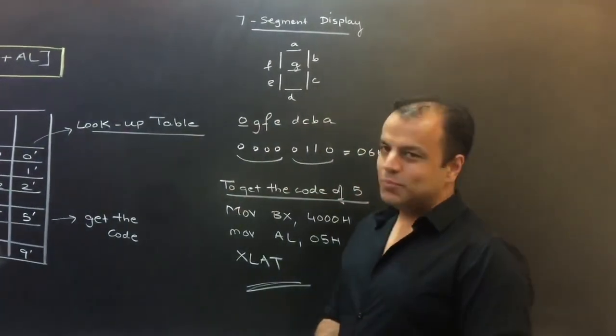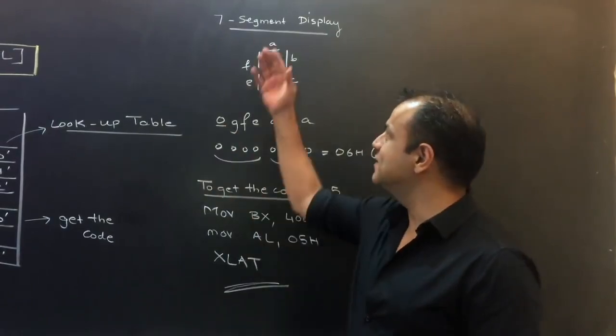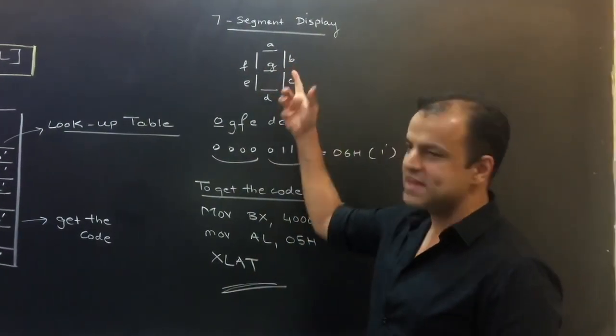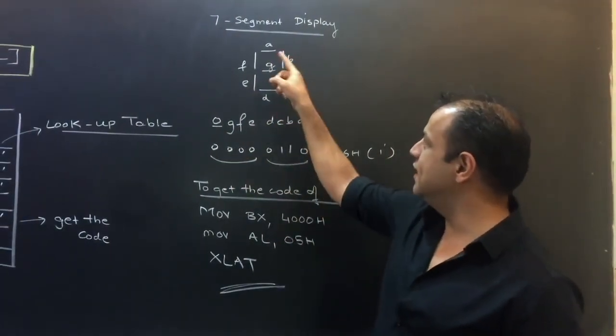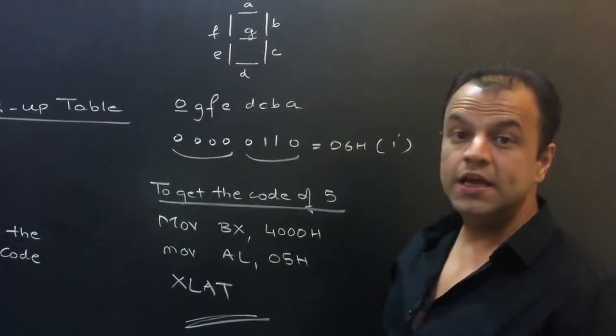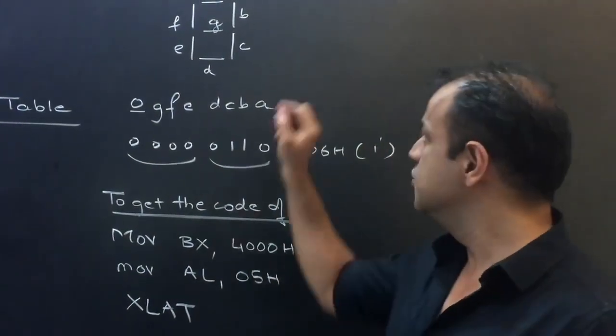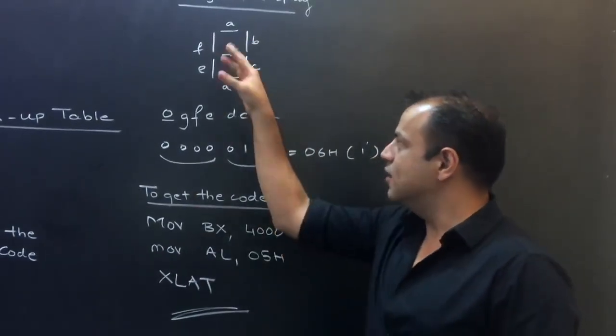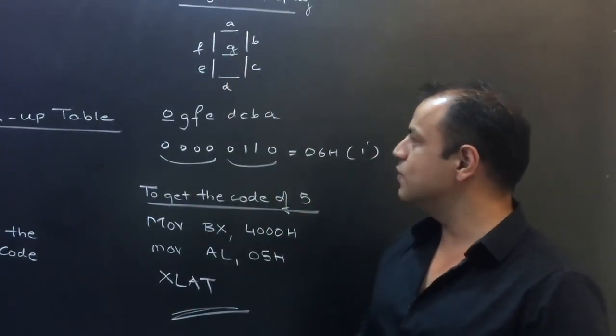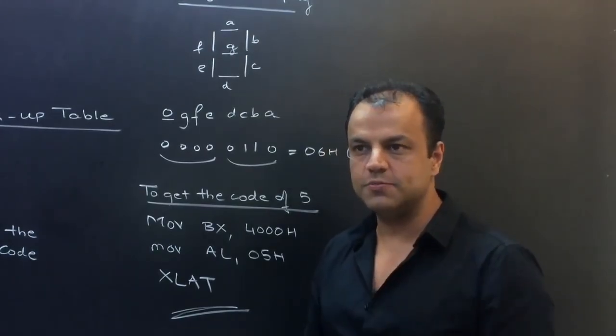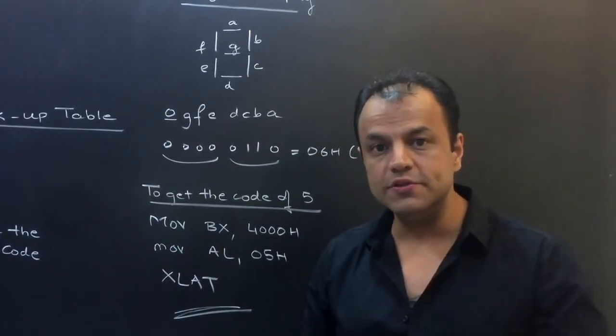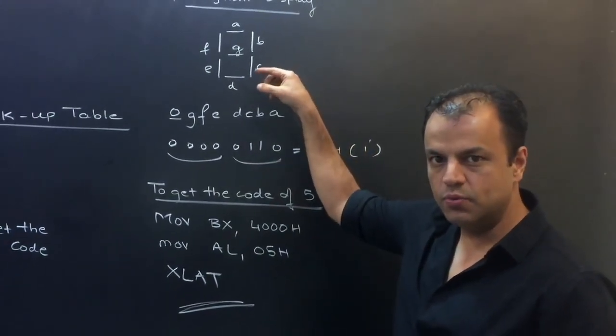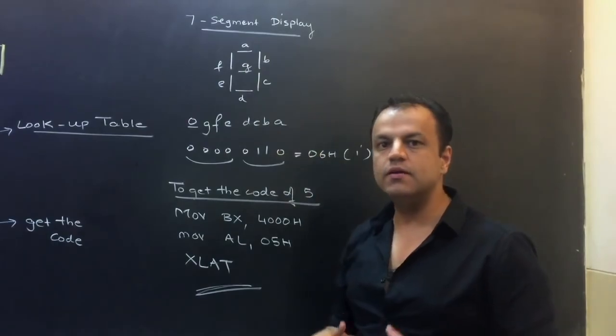Suppose we look at a seven segment display. Everybody knows how a seven segment display works. There are seven segments. It can be used as seven LEDs. They are called A, B, C, D, E, F, G. If you have a point, like some displays have a fraction, that point will be X. Most displays don't include that. Now, in this display, if you want to display one, if you want to show one on this display, you don't send one to the display. You send a code, a pattern that will activate B and C, will turn them on and the others should be turned off.